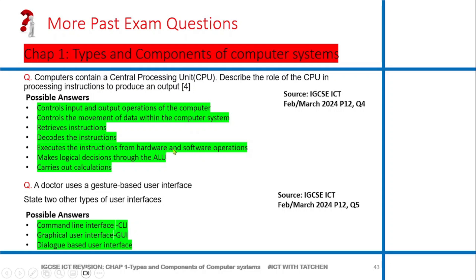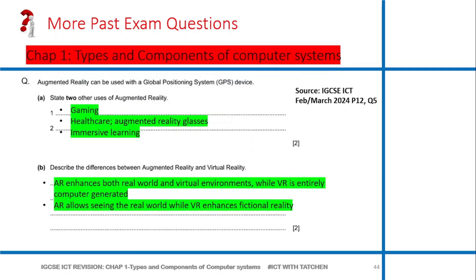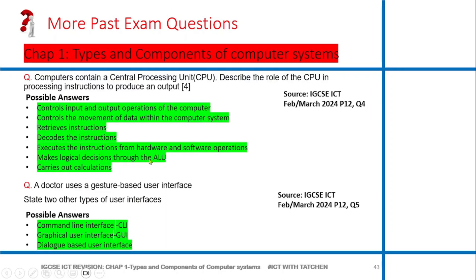It decodes the instructions, executes the instructions from hardware and software operations. The next one you can say makes logical decisions through the arithmetic and logic unit. That's why the computer can do a lot of complex calculations - this is because of the arithmetic and logic unit. The control unit is what is used to control input and output operations, control the movement of data within the computer. The CPU, as we all know, has the control unit and the ALU - those are the main parts of the CPU that carry out all of this. The ALU also carries out calculations.